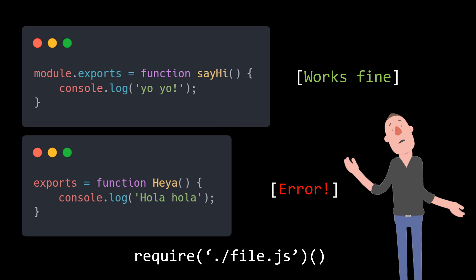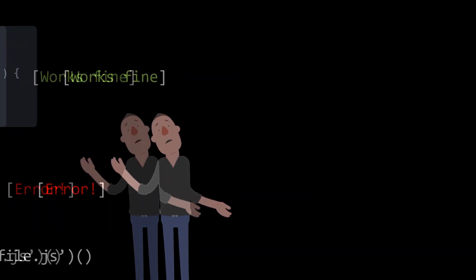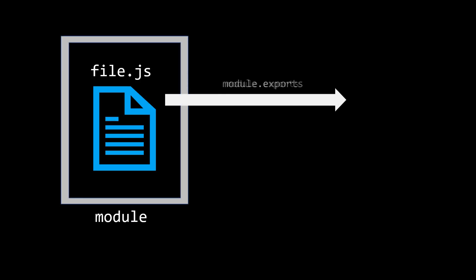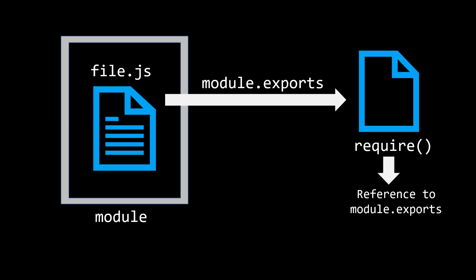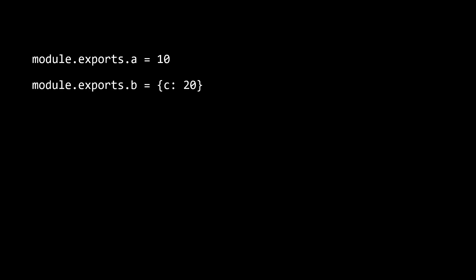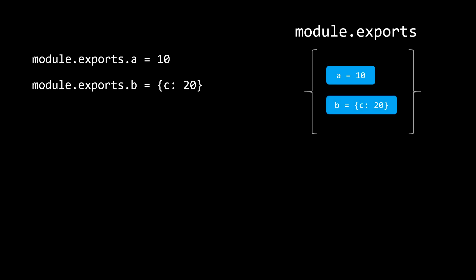What went wrong there? Let us understand. Whenever we require any module from inside of any other, we get a reference to the exports property on the module object that Node made available inside that module. So whatever module.exports is pointing to — which is an empty JavaScript object by default — is the only thing that any other module can access from this module. We can see that when we set something like module.exports.a or module.exports.b, we are just adding keys to the module.exports object.